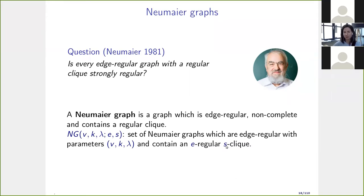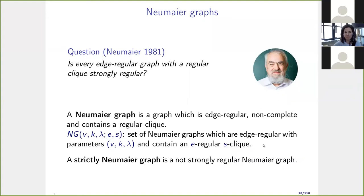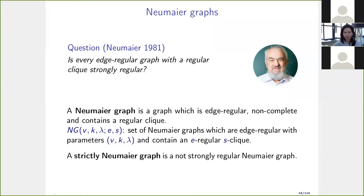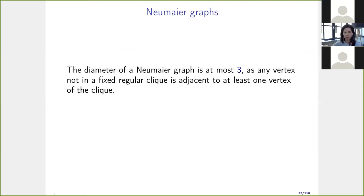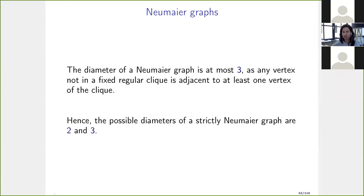The definition of strictly Neumeier graph is analogous to what data graphs introduced by Willem and co-authors. Sometimes I use s for the size of the clique and sometimes s+1 — it depends on which is nicer for computations. One important observation: the diameter of a Neumeier graph is at most three, since any vertex not in the fixed regular clique is adjacent to at least one vertex of it. Hence the possible diameters of strictly Neumeier graphs are two or three.